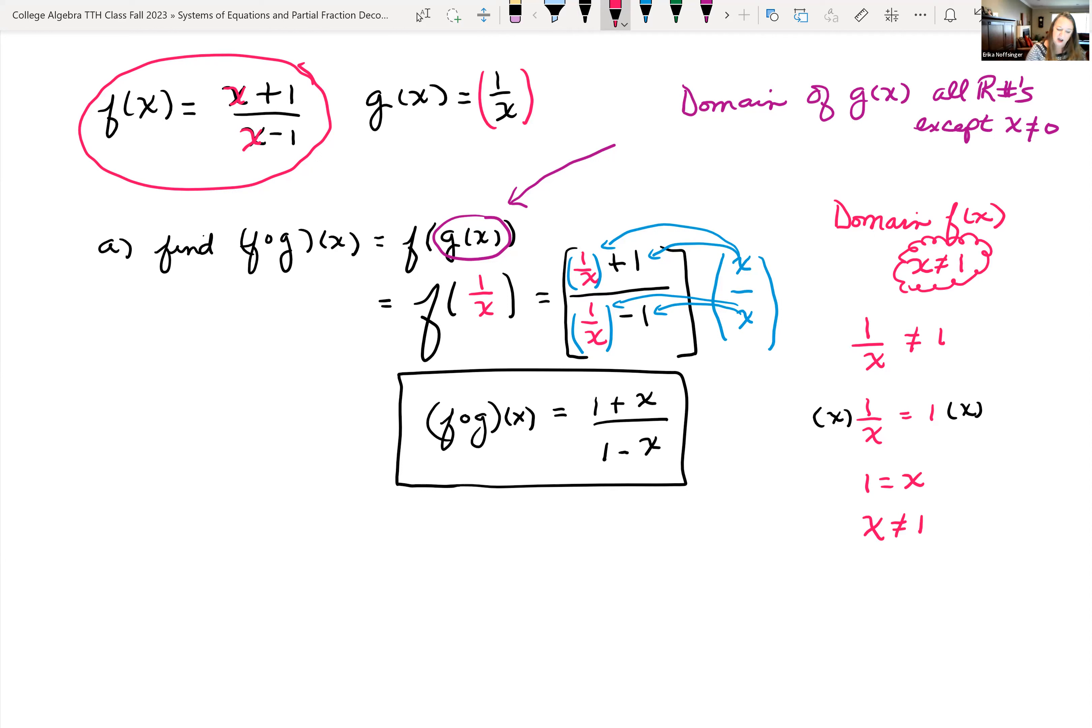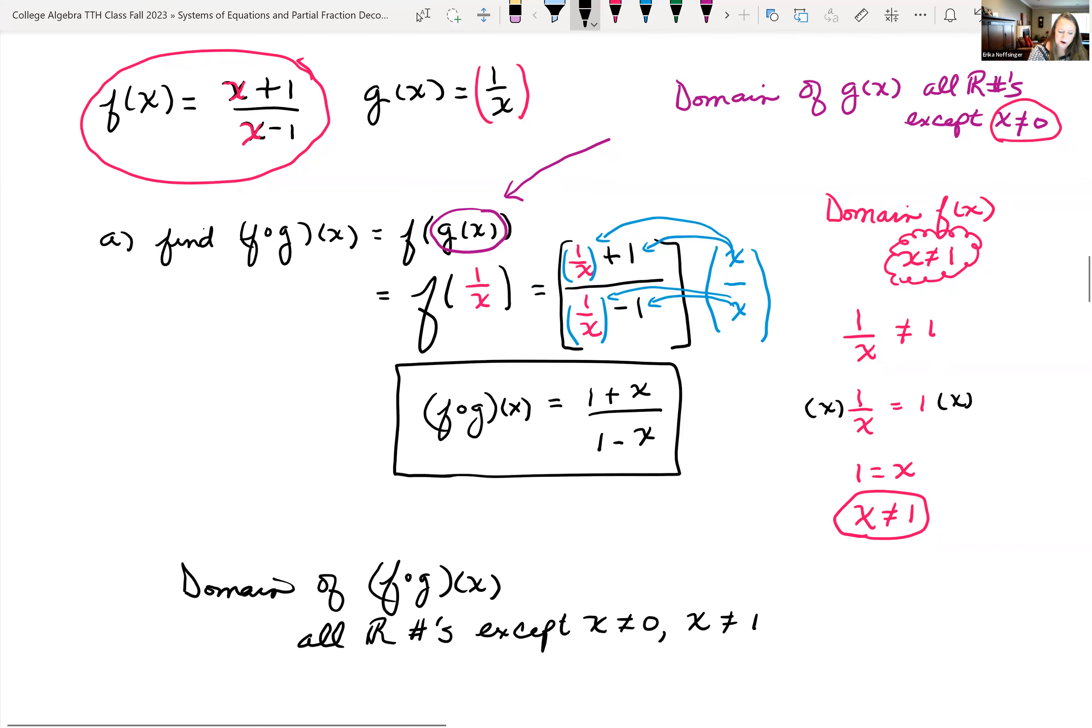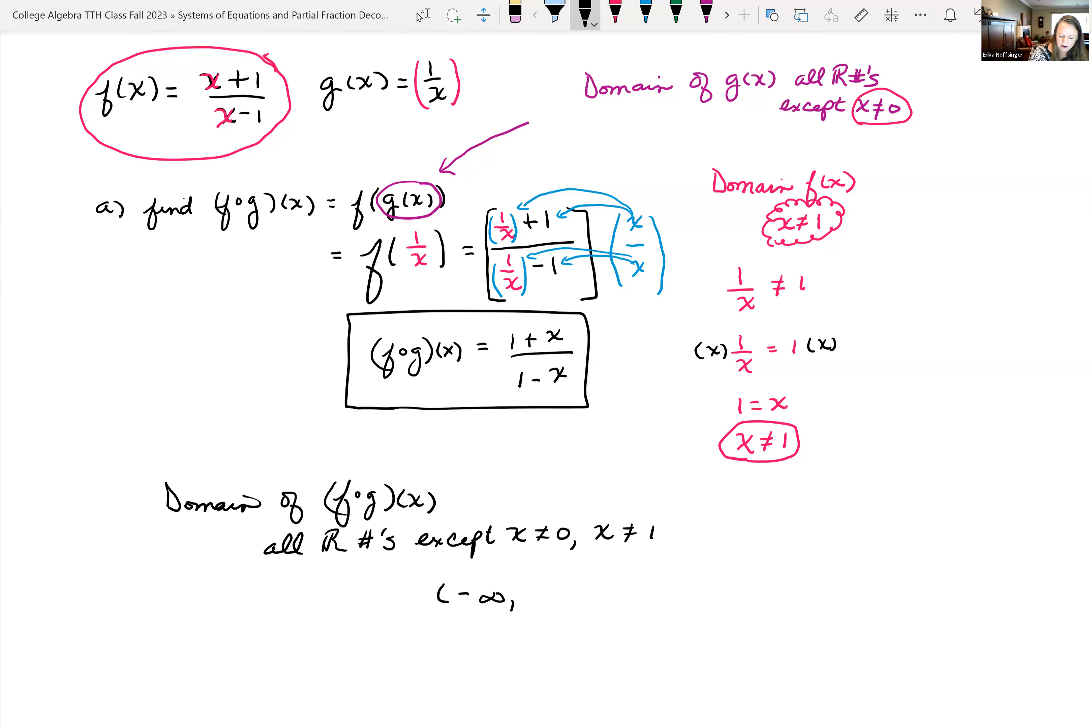And so the domain of the composition, we cannot have x equals 0 and we cannot have x equals 1. So the domain of the composition of that function is all real numbers. There's multiple ways that we can express this, except x cannot be 0 and x cannot be 1. Or if it asked for interval notation, we're coming in from negative infinity, all values of x up until we hit 0 really close, but not including. Then all the numbers close to 0 on the right, up to 1, not including. And then all the numbers from 1 to infinity, not including 1.